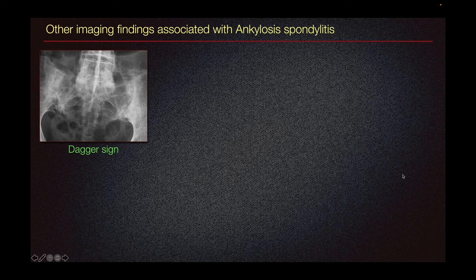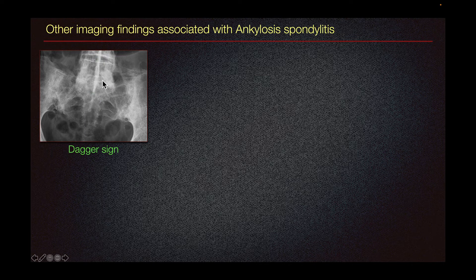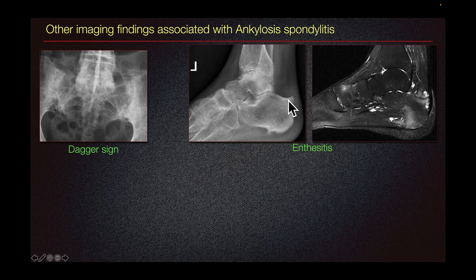Other imaging findings associated with ankylosing spondylitis include the dagger sign, which is a single central radiodense line typically seen on frontal radiographs, related to ossification of the interspinous ligament secondary to enthesitis. Enthesitis is another imaging finding of ankylosing spondylitis — it is an inflammation at the attachment of a ligament or tendon to bone.